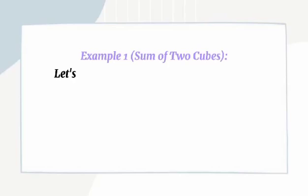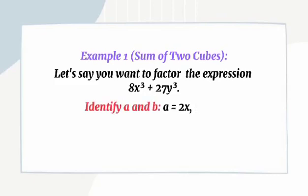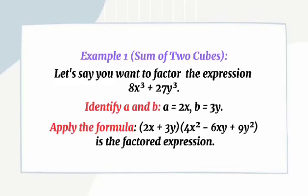Example 1: Let's say you want to factor the expression 8X cubed plus 27Y cubed. Identify A and B: A equals 2X, B equals 3Y. Apply the formula: 2X plus 3Y, times 4X squared minus 6XY plus 9Y squared — that is the factored expression.